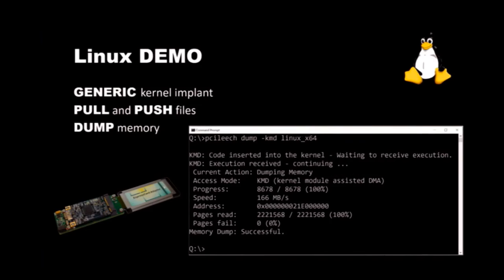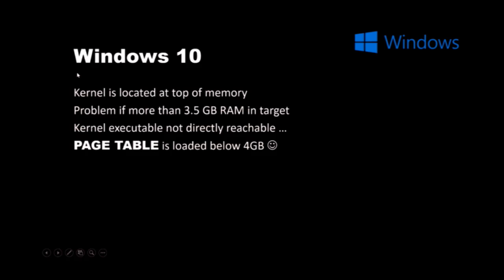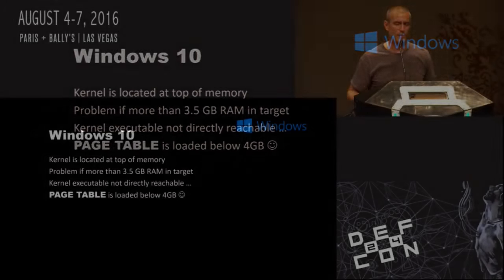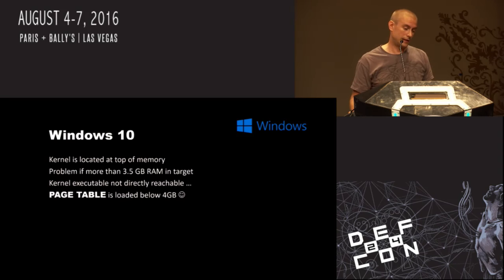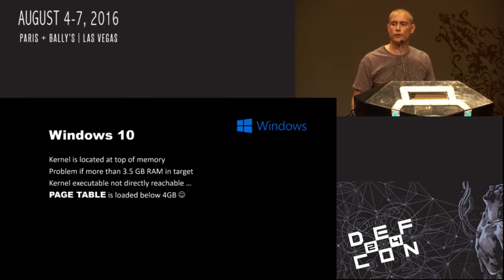Let's move on to Windows 10. In Windows 10 the kernel is located at the top of physical memory, which is a problem for us since we can't access it directly — and this is a problem if the computer has more than around 3.5 gigs of RAM, because memory-mapped PCI Express devices push the last bytes of memory well above 4 gigs. So the kernel executable is not reachable directly and most drivers are also loaded above 4 gigs. But if you look at memory structures below 4 gigs, the page table for the kernel itself and important kernel drivers are actually loaded below 4 gigs in their entirety.